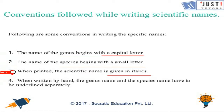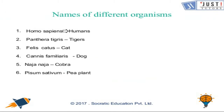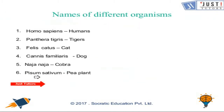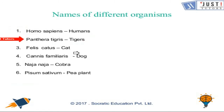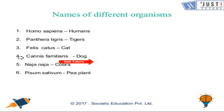I hope all four points are clear to you. Now let's have a look at some of the names of different organisms and their scientific names. Humans — their scientific name is Homo sapiens. Tigers — Panthera tigris. Cat — Felis catus. Dog — Canis familiaris.